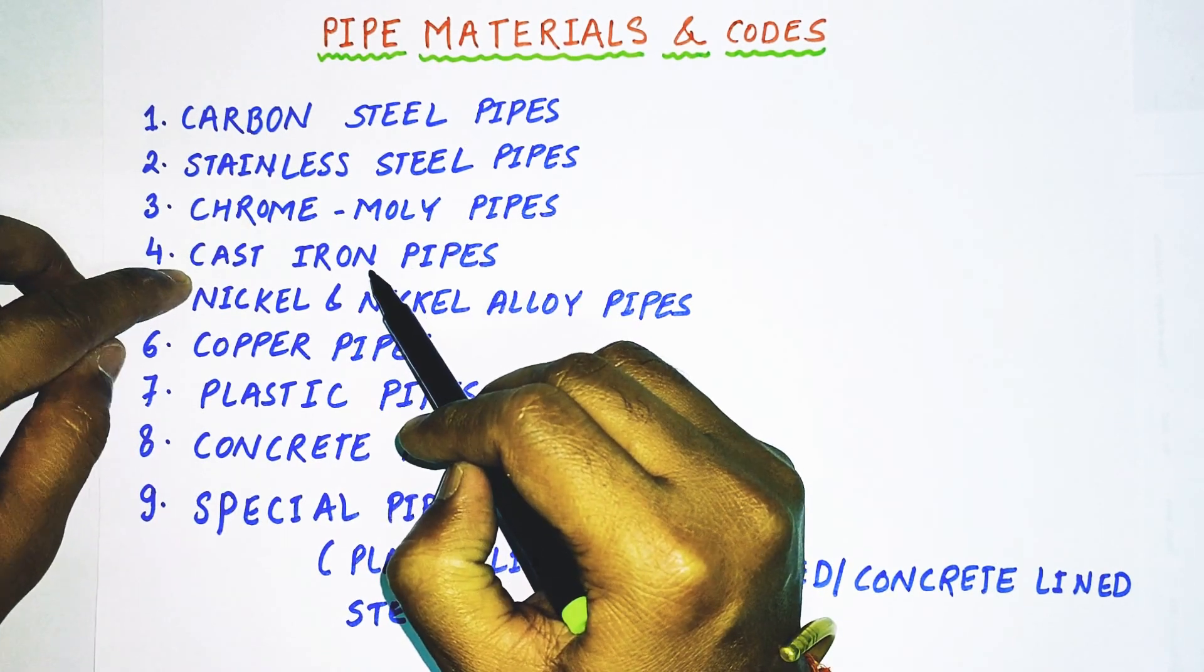We will learn about the first four: carbon steel, stainless steel, chrome moly, and cast iron pipes and their grades and specifications. Let's start with carbon steel pipes. These materials are widely used and most common in the industry.